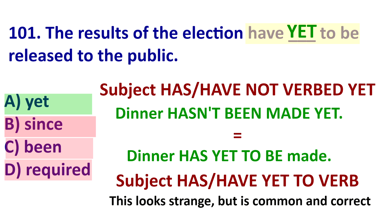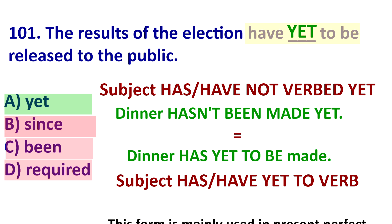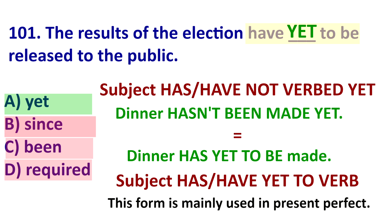Let's give one more example. 'Dinner hasn't been made yet' — another way to say this: 'dinner has yet to be made.' This form is used in present perfect about 95% of the time. So as we see, the answer is A.